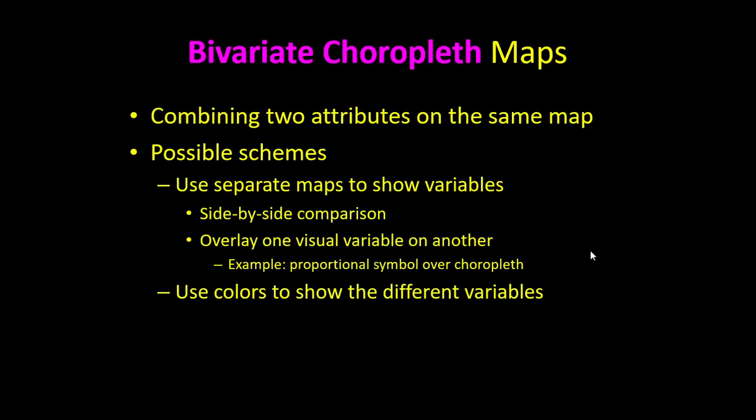First, we're going to use examples where we use separate maps to show variables, so we can do a side-by-side comparison. These are very simple ideas. We might have a map of land cover of the same area, and then right next to it, a map that shows population density of the same area. Or you might have a proportional symbol map right next to a choropleth map.